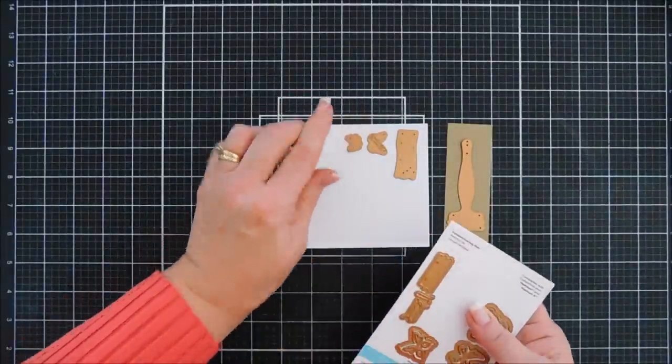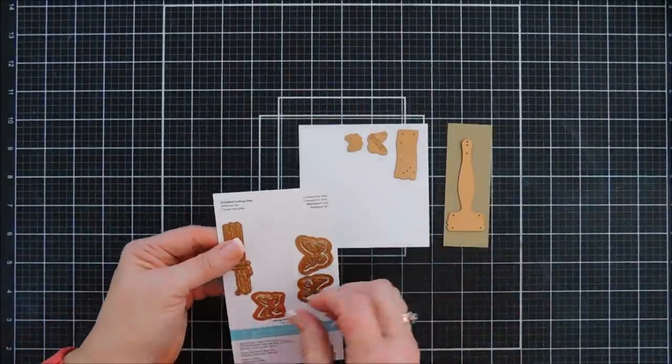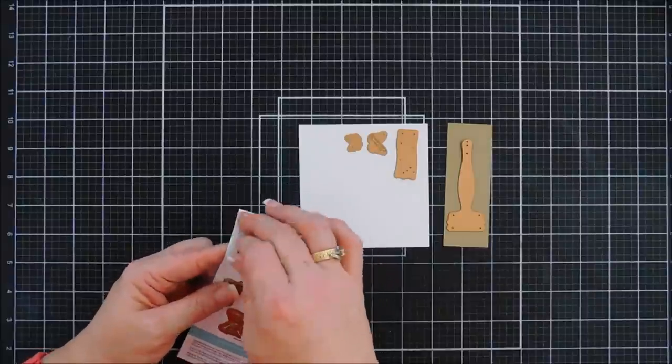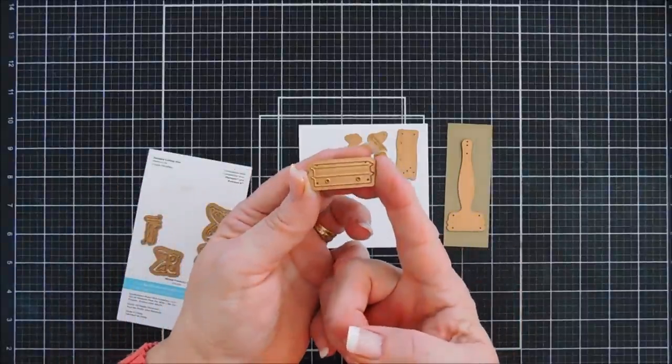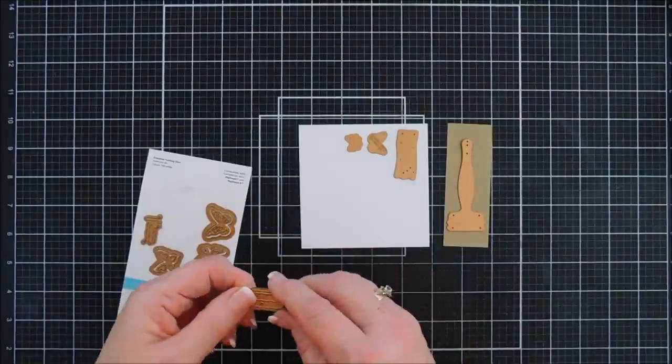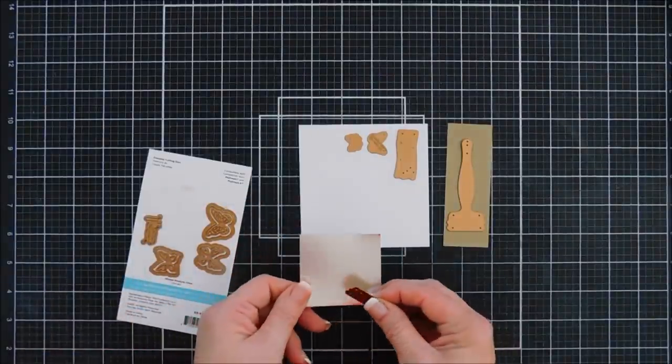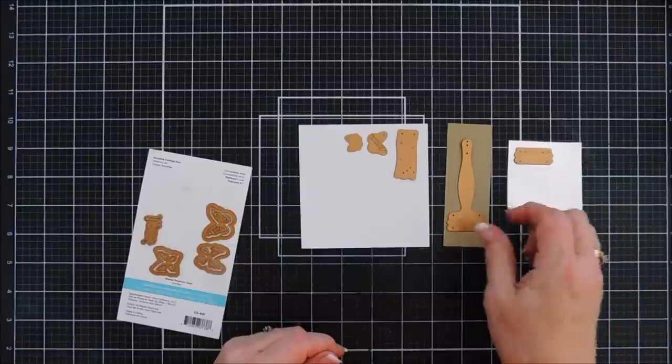There's a medium and a small. And then I am going to take this piece, this is like the metal piece. I have some silver mirror cardstock. I'm going to die cut that out with that.